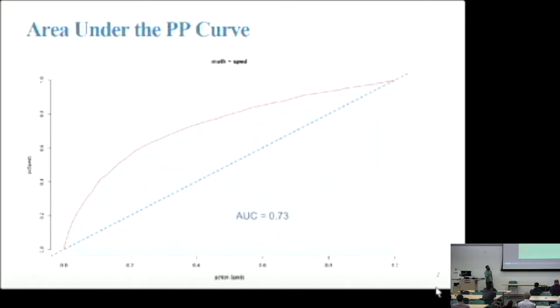As I mentioned, you can calculate the area under the curve. In this case, it's 0.73. This has some really nice properties in terms of interpretation, because now what this AUC value corresponds to is the probability that a randomly selected student from the x-axis group would score above a randomly selected student on the y-axis. In this case, we've got a 73% chance that a randomly selected general education student would be scoring above a special education student, randomly selected.